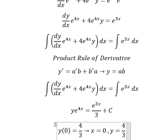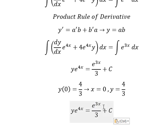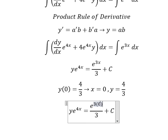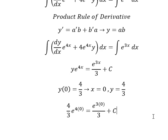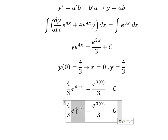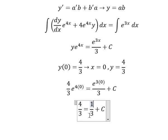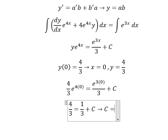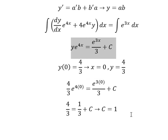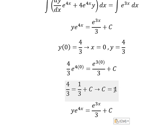We put 0 and 4/3 here to find the value of C. We simplify everything: this one we have 1, this one we have 1. 4/3 minus 1/3 we have 1, so C equals 1.